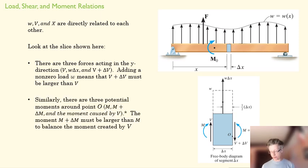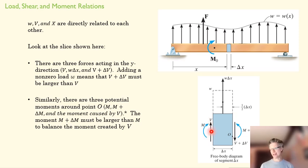We can make the same case for moment equilibrium. If we take moments about an axis, we have one moment turning clockwise, another counterclockwise, and the shear providing an additional moment. For equilibrium, the moment on one side plus the moment caused by the shear must equal the moment on the other side. So there's a relationship between how large the shear is and the difference in moment on each side of the element.